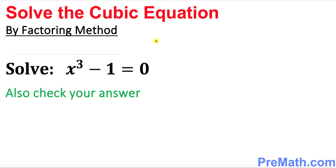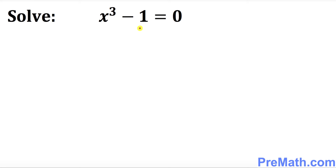Hello again everyone. In this example we will be asked to solve this cubic equation by using a factoring method, and eventually we're going to check our answer. So before we solve this given cubic equation, we have x³ minus 1, and as you can see that 1 could be written as 1³, which is the same as 1.